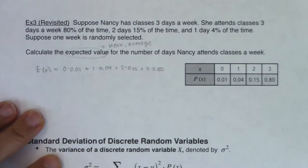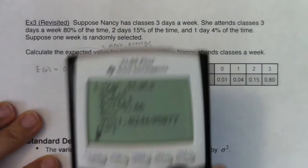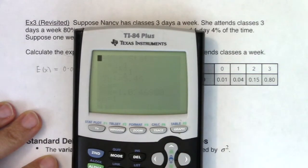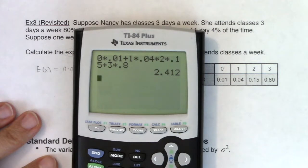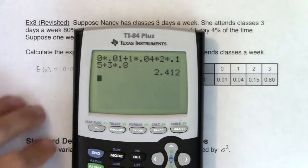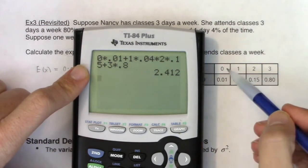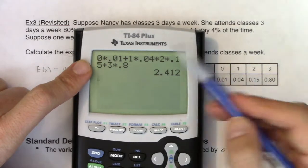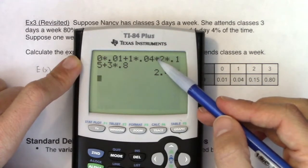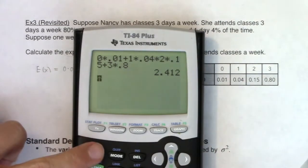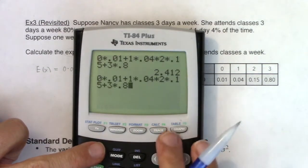When I'm calculating the expected value this way, I'll just typically do it on my calculation screen. We have 0 times 0.01, plus 1 times 0.04, plus 2 times 0.15, plus 3 times 0.8, and we're looking at 2.412. I think I made some kind of typo because this is not the number I'm supposed to get. I can see my second typo - this should be a plus sign.